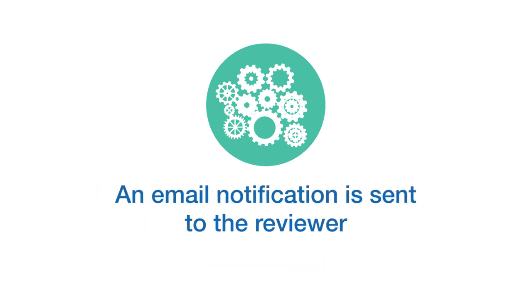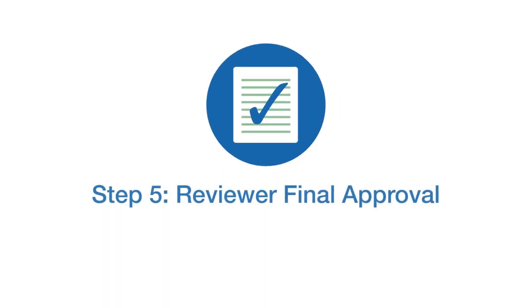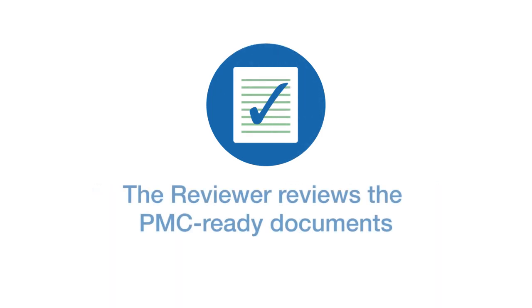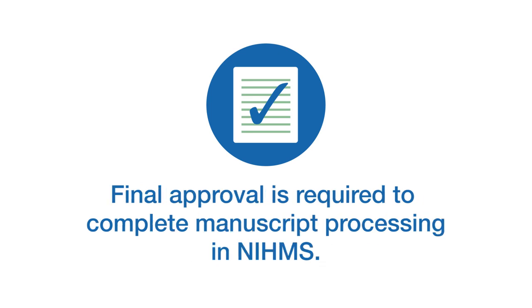An email notification is sent to the reviewer when the record is available for final review. Step five: reviewer final approval. The reviewer reviews the PubMed Central Ready documents and either requests corrections or approves them for inclusion in PubMed Central. Final approval is required to complete manuscript processing in NIHMS.